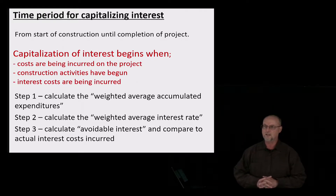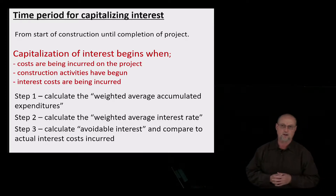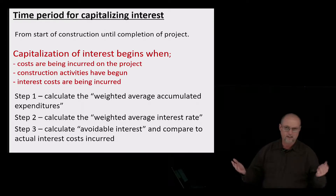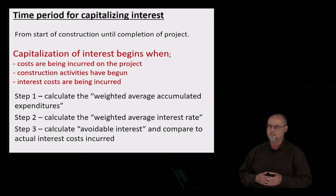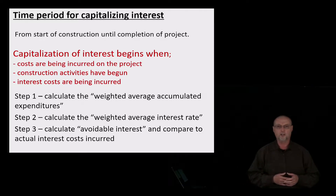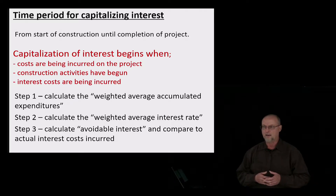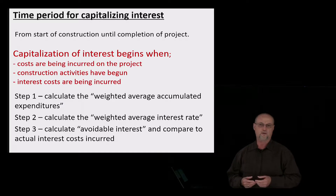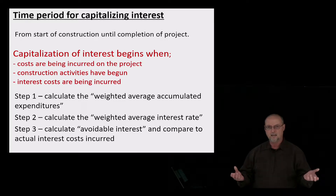Capitalization of interest begins when we're incurring costs — labor costs, building materials and other related costs — and construction has begun. That's important. And we are incurring interest; if you're not incurring interest, we're not going to capitalize it. So we're going to follow these three steps: first, we calculate the weighted average accumulated expenditures; second, we calculate the weighted average interest rate; and third, we calculate avoidable interest — your book might call it calculated interest — and compare that to the actual interest cost. We capitalize the smaller amount between avoidable interest and actual interest.